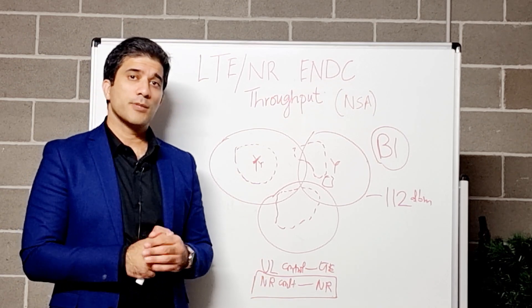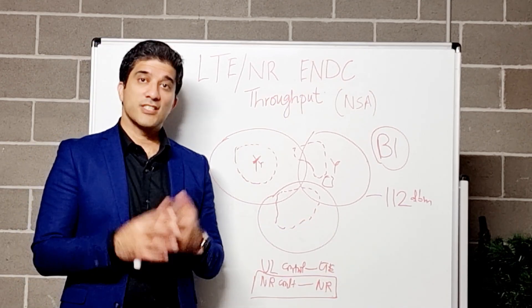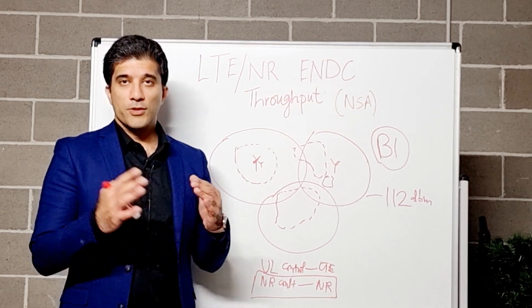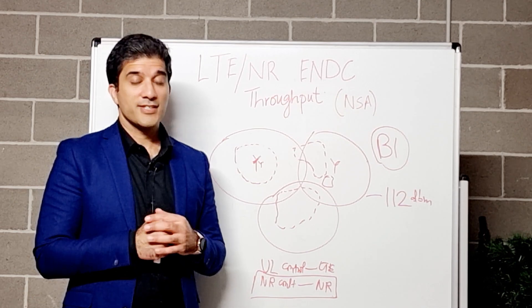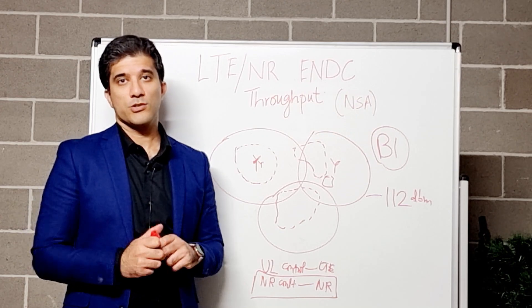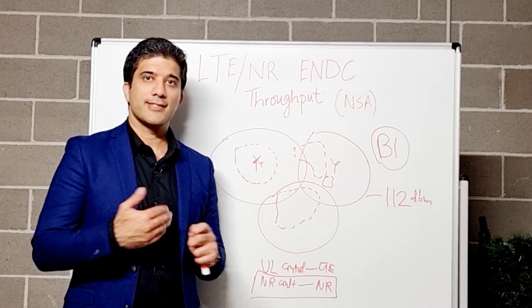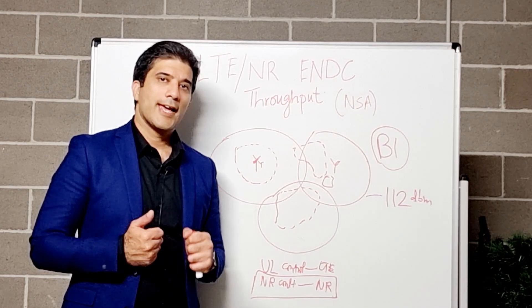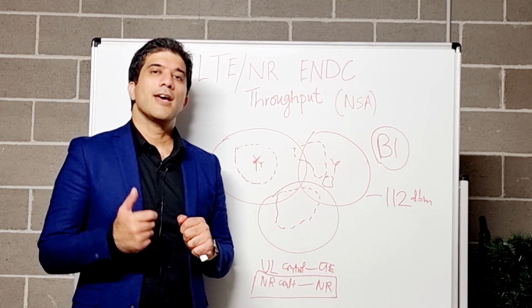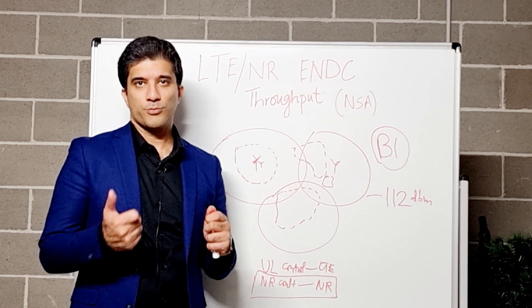One more point I wanted to discuss is the uplink. If you go into low coverage areas, your NR uplink will suffer significantly because it is on a much higher frequency. Your uplink reports may suffer significantly, and therefore your uplink throughput will also suffer significantly. When designing a network, you want to consider where to use LTE as the uplink layer and where to use NR as the uplink layer. These are key considerations when designing and strategizing an NSA network to get the best throughput from LTE and NR.